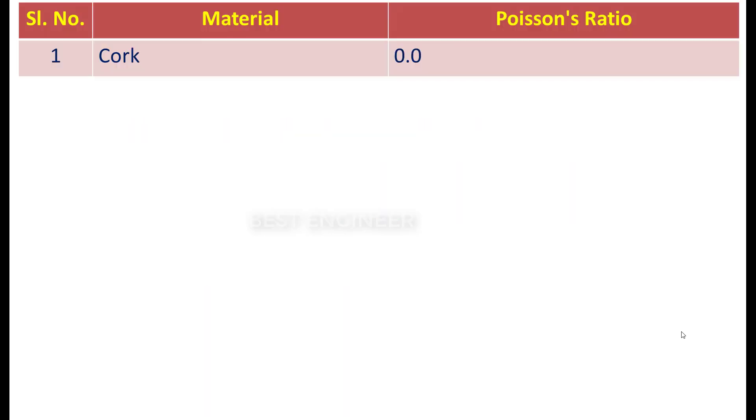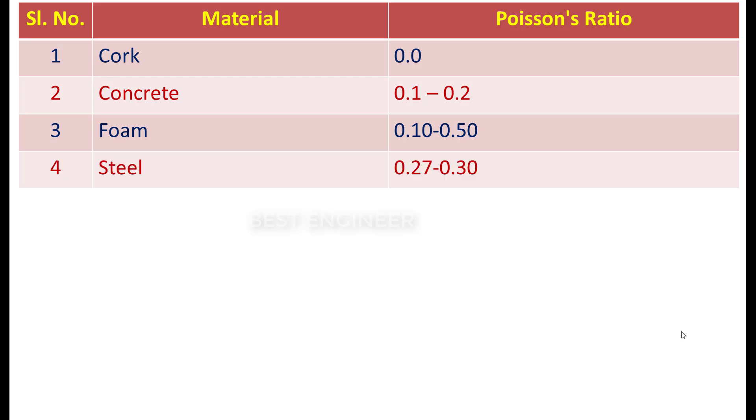Now, let us see the Poisson's Ratio for different materials. For cork the Poisson's Ratio is 0.0. For concrete, 0.1 to 0.2. For foam, 0.1 to 0.5. For steel, 0.27 to 0.3.